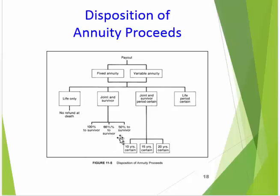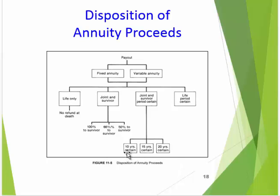This does describe some basic things. With joint and survivor, you can set it up so that 100% goes to the survivor, or only 50% goes to the survivor. If 100% goes to the survivor, the payments are going to be much smaller to begin with because it has to last over two lifespans rather than just one. Survivor benefits can be set up for 10, 15, or 20 years certain.